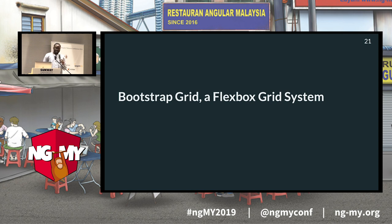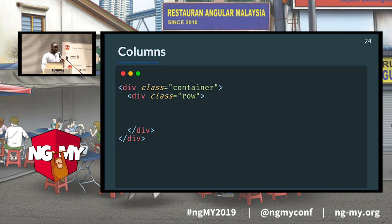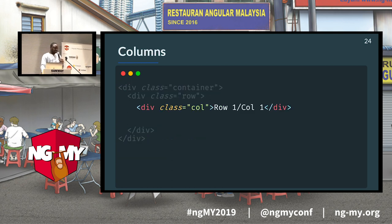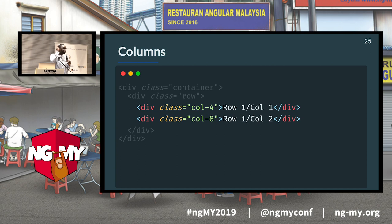The Bootstrap grid is based on Flexbox. It works with a container as the home for rows and columns. Inside rows we have columns, which define the actual grid cells where you put your content. You can specify how many units your column takes — by default the Bootstrap grid has twelve units. So a column with four units and another with eight units fills the row. You can use 'col-md-6' which means on medium-sized devices the column takes half the space, and on larger devices it takes four of twelve units.